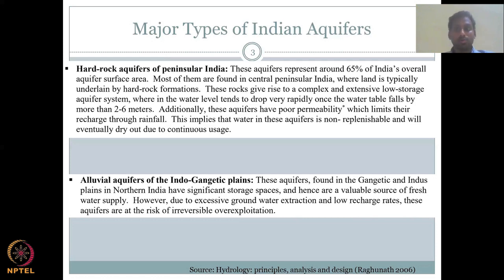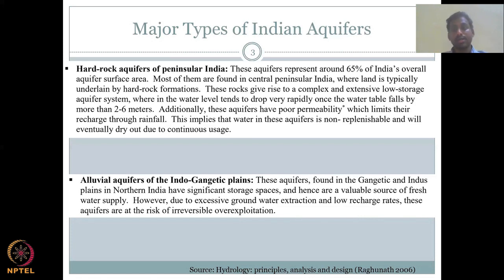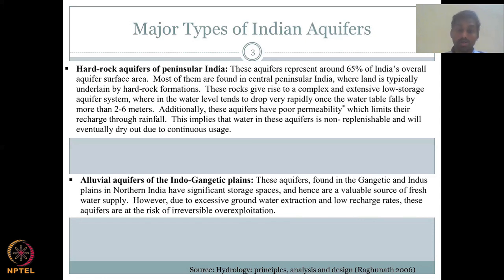The natural recharge rate in alluvial aquifers is still low, but much better than in hard rock aquifers due to better hydraulic conductivity and permeability. These plains already have good surface water — the Ganges and the Indus are among the biggest rivers in the world. So if people are still using groundwater despite these rivers, it means the demand side has to be managed, not the supply side. There is concern about how water is being used.